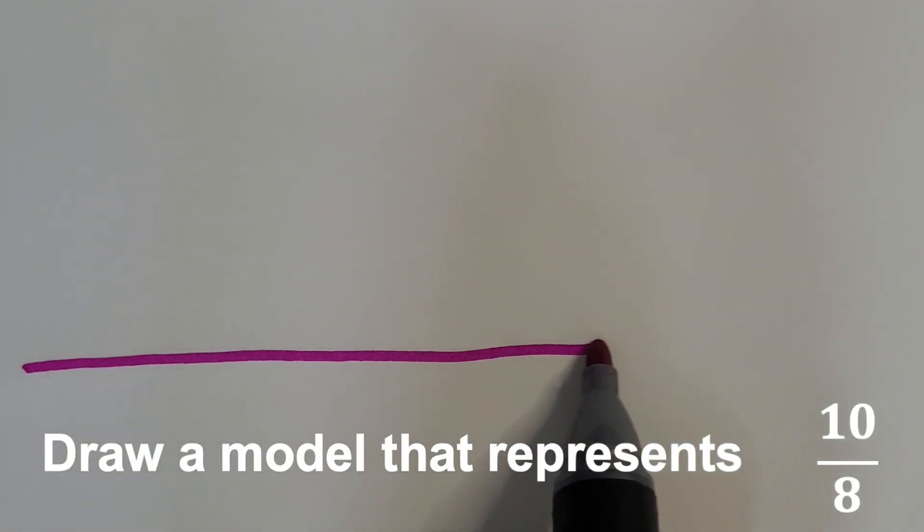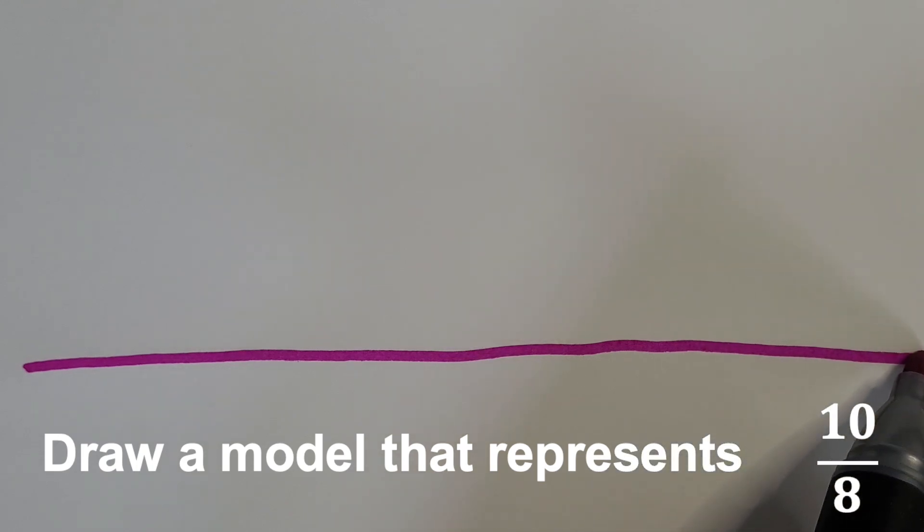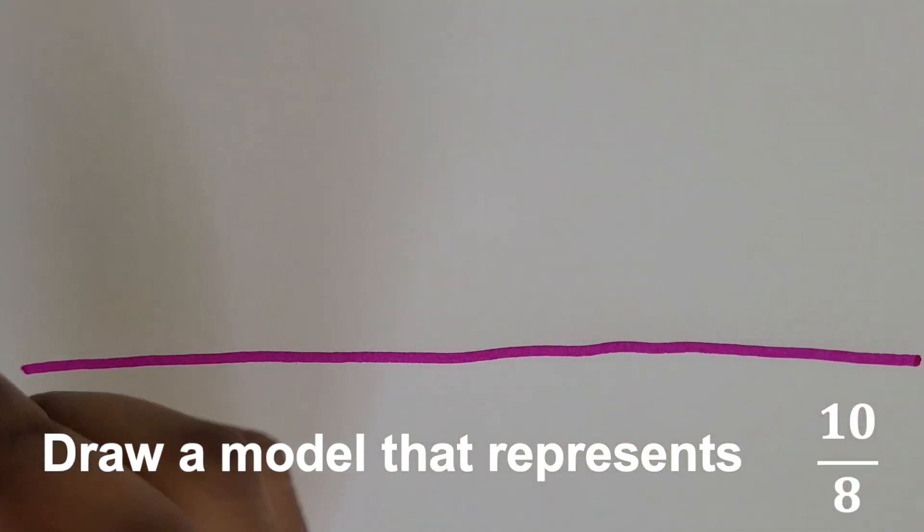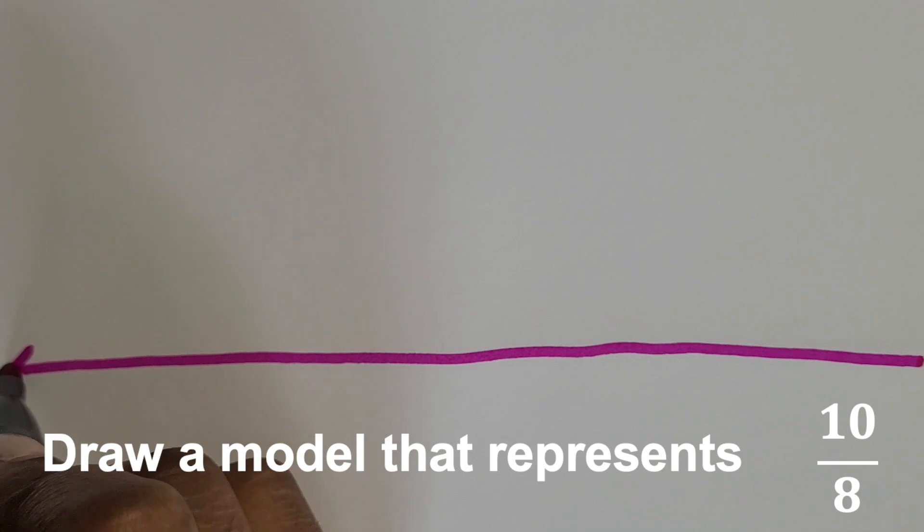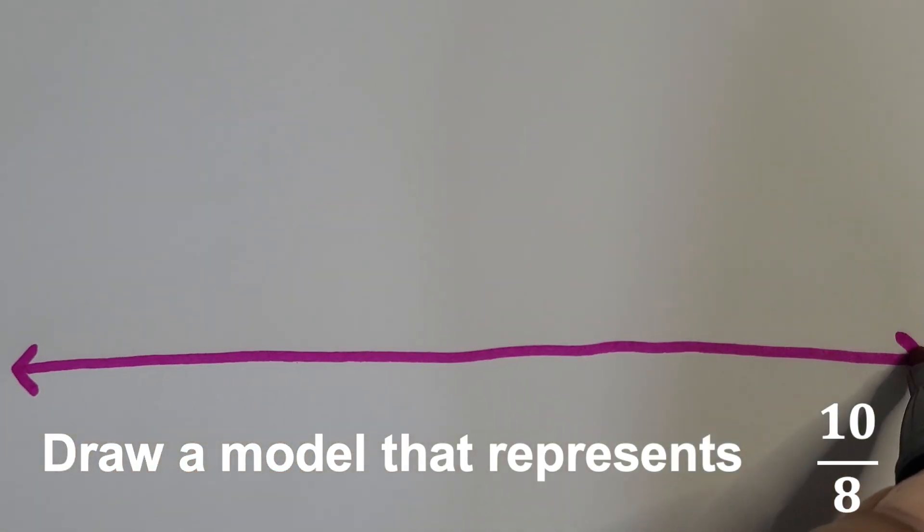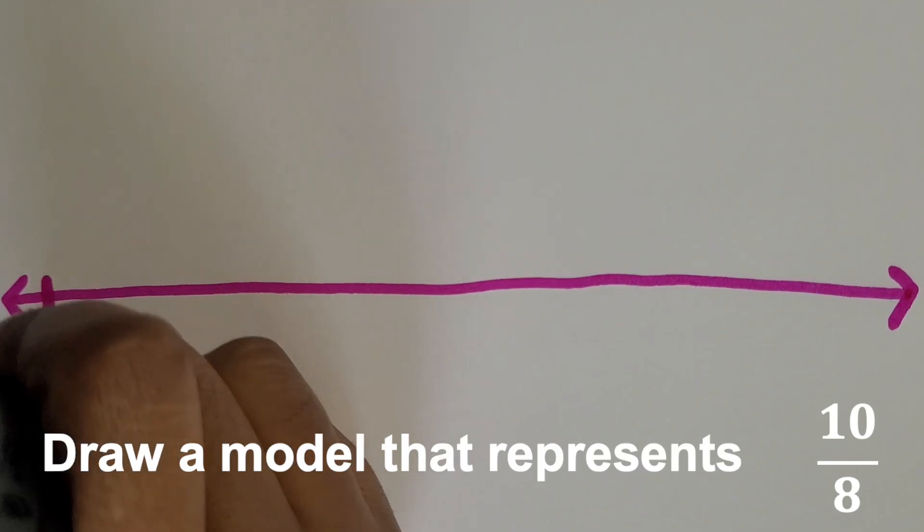Now we'll represent 10 eighths. So since it's a fraction that's larger than one hole, we know we need at least two holes, so we're going to partition our line into two holes.